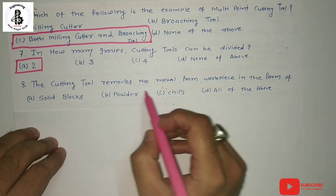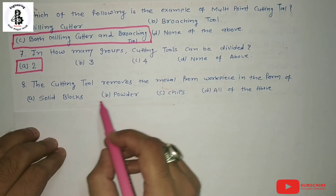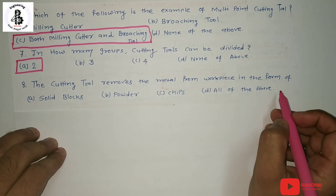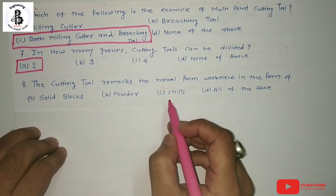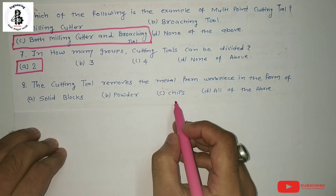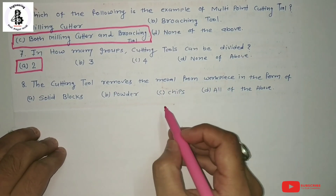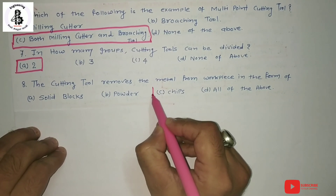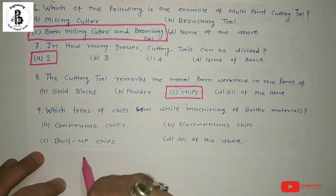Eighth question: The cutting tool removes metal from the workpiece in the form of what? Options are: solid blocks, powder, chips, and all of the above. In cutting operations, metal is removed in the form of chips. For ductile materials these are continuous chips, and for brittle materials discontinuous or segmental chips. The general answer is chips.